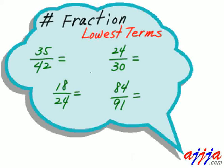What about thirty-five over forty-two? Too big to see right away. Try subtraction: forty-two minus thirty-five is seven. Seven goes into both — thirty-five divided by seven is five, and forty-two divided by seven is six times. So the answer is five over six.